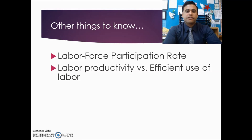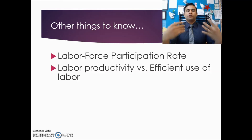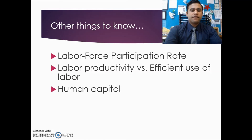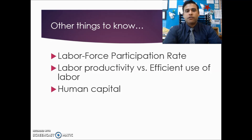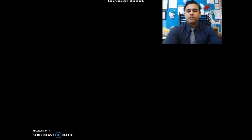Labor productivity refers to how much the labor being used actually produces — increasing productivity expands production possibilities. Efficient use of labor refers to how much unemployment exists; high unemployment is inefficient use of labor. Finally, human capital means the training and skills of the workforce — not the quantity of labor, but the quality and skill level of workers. That's all for today. Happy studying.